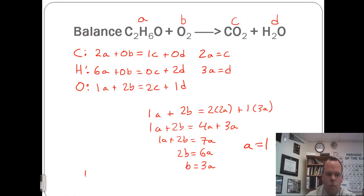Therefore, we're going to get 1 C2H6O. We have B equal to 3A, so 3O2. C equal to 2A, so 2CO2. And D equal to 3A, 3H2O.